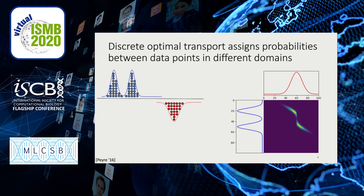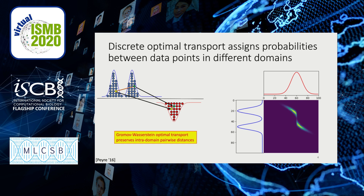In the discrete setting, you get a probability matrix that tells you how all the data points are related. The row sums give you the first distribution and the column sums give you the second distribution. Once you have this matrix, you can use it to transport the points from one domain onto the other. What we end up using is a special version called Gromov-Wasserstein optimal transport, where the cost function looks at pairs of distances — specifically how you distort pairs of distances in the transport. By preserving pairwise distances, we preserve local structure in the data so that when you project one dataset onto the other, you still retain some of that initial biological meaning.